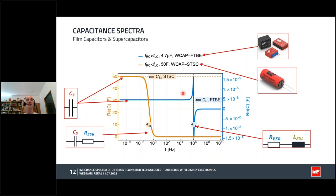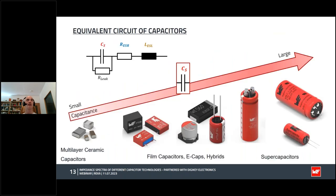The spectrum of the 4.7 microfarad capacitor looks quite different. That is what capacitance spectra of low capacitive parts typically look like. At low frequencies, they show a clear capacitive behavior. The most striking feature, however, is the strong asymptotic behavior at the characteristic LC frequency. At this point, capacitance and parasitic inductance lead to a resonating behavior. Above the characteristic LC frequency, the capacitance again tends towards zero, meaning the capacitor cannot be charged anymore.